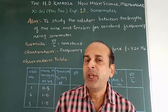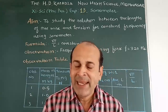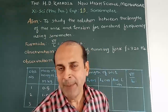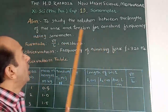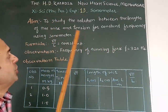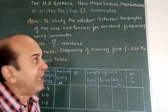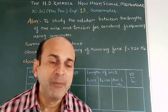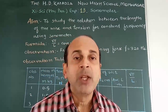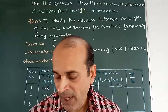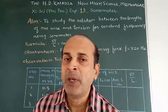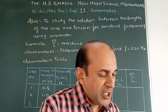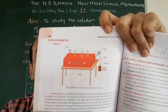Last time we found the relation between the frequency and length of the wire using sonometer. Today the apparatus is the same but the aim is slightly different. Our aim is to study the relation between the length of the wire and tension for a given constant frequency using sonometer. Here we have a tuning fork, a rubber pad, and the sonometer instrument. You will draw the figure from the page shown here.